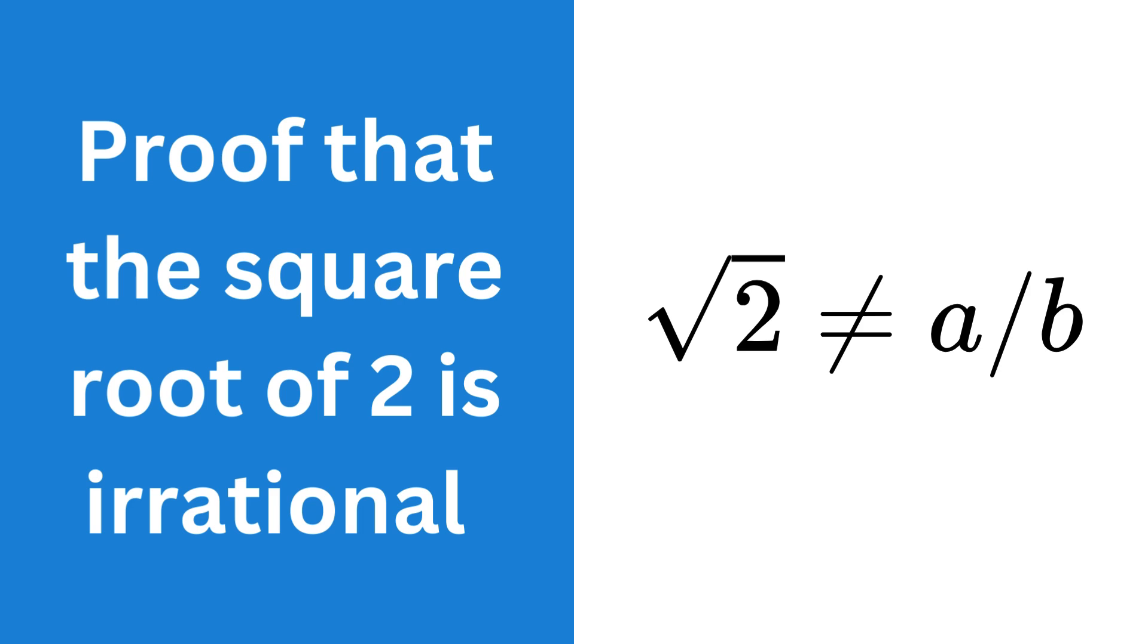The square root of 2 is somewhere between 1 and 2, but is it a rational number? Let's prove that it isn't.